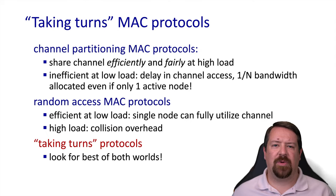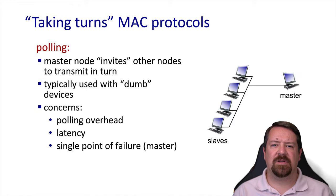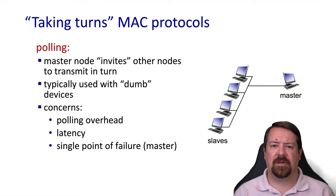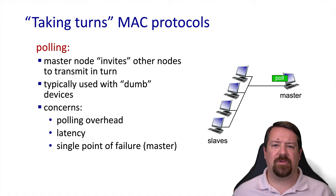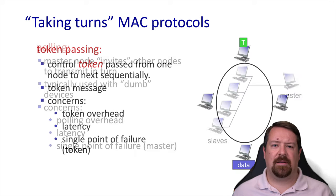Now we come to the taking turns protocols, an attempt to find a middle ground between both previous categories. One way to do this is polling. One of our goals was to not have a master node, but that is required in this case. In the polling scenario, the master node asks each device in turn whether it has something to transmit. The issues are that polling takes some time, so we lose some efficiency, plus we have the expense of the master node, and it can be a single point of failure — if the master node goes down, nobody gets polled and nobody gets to transmit.